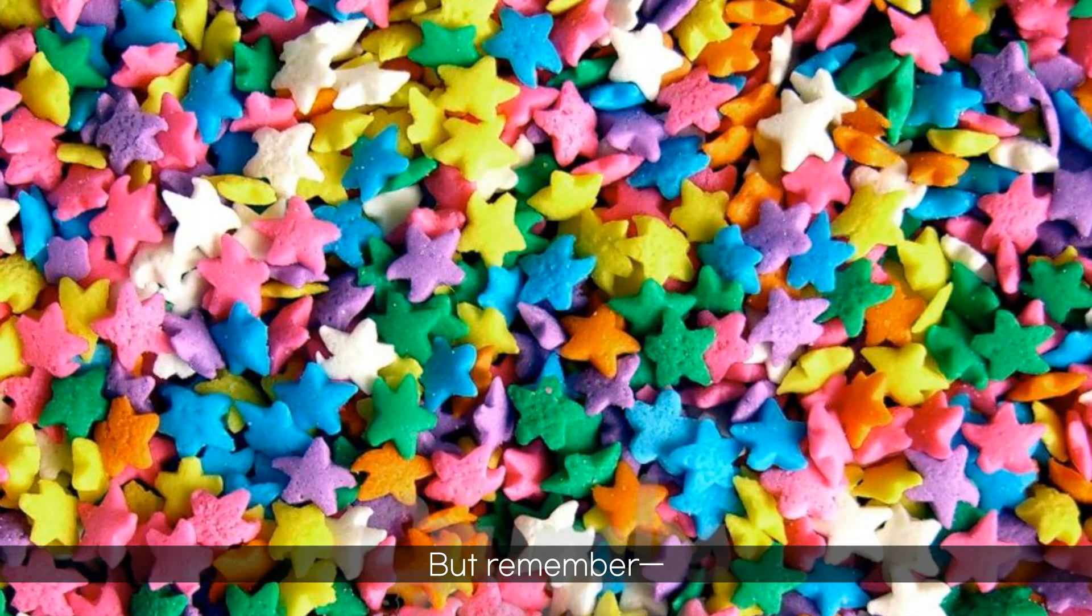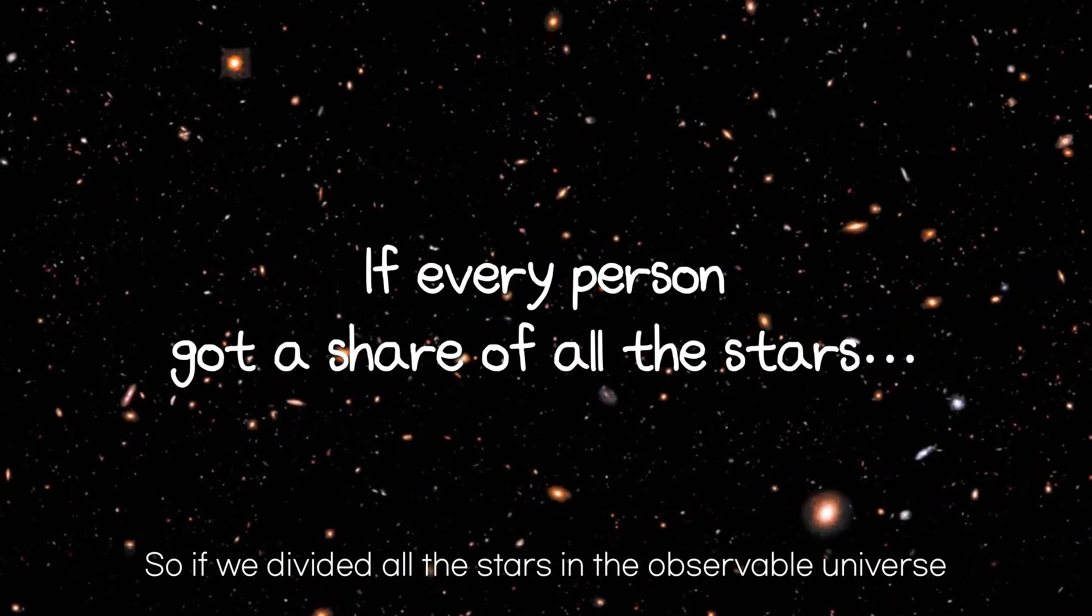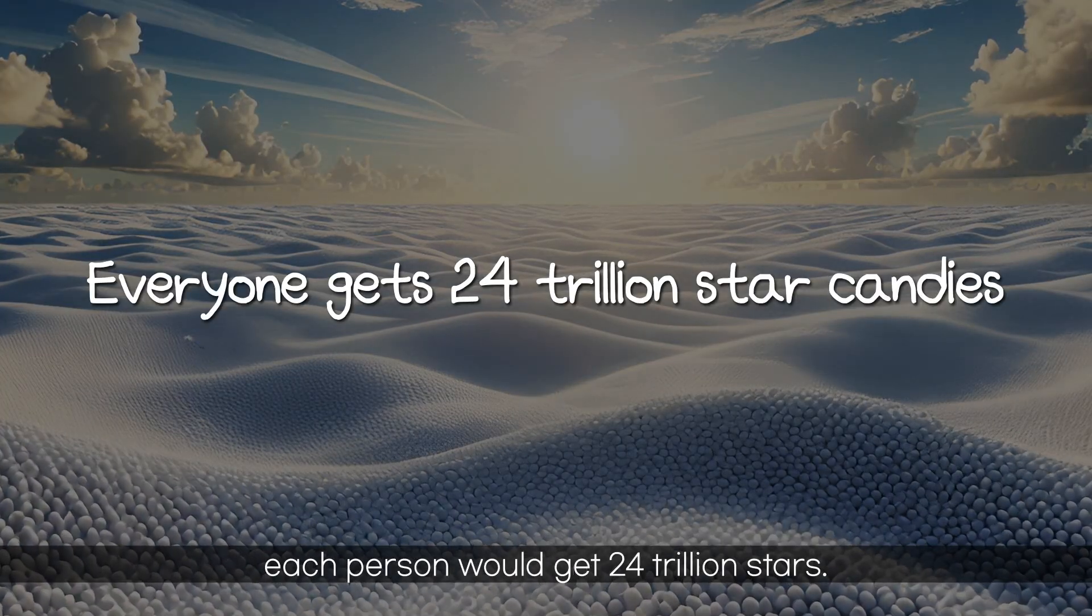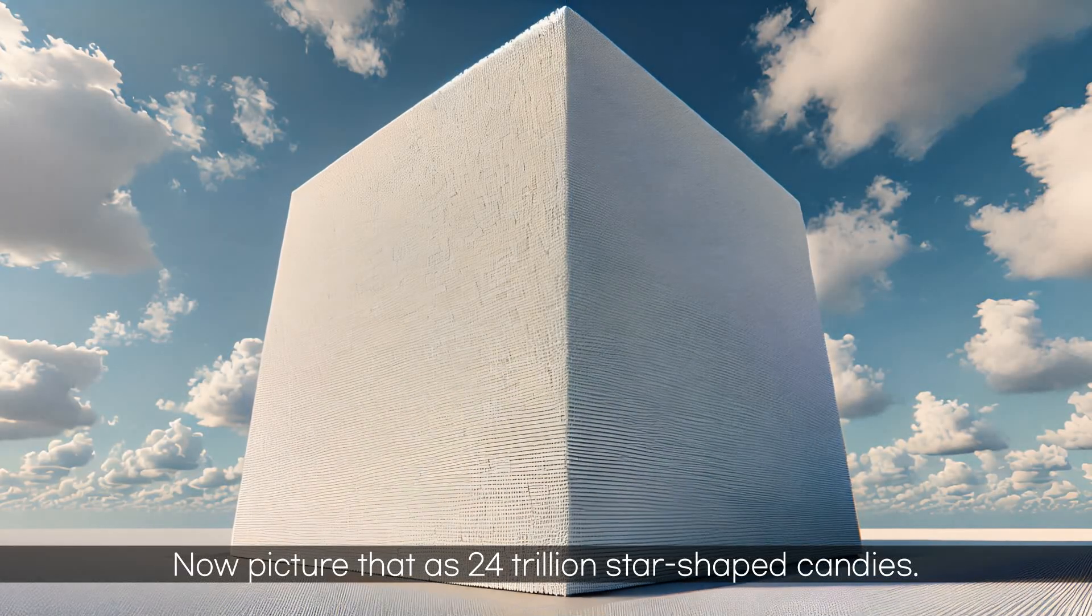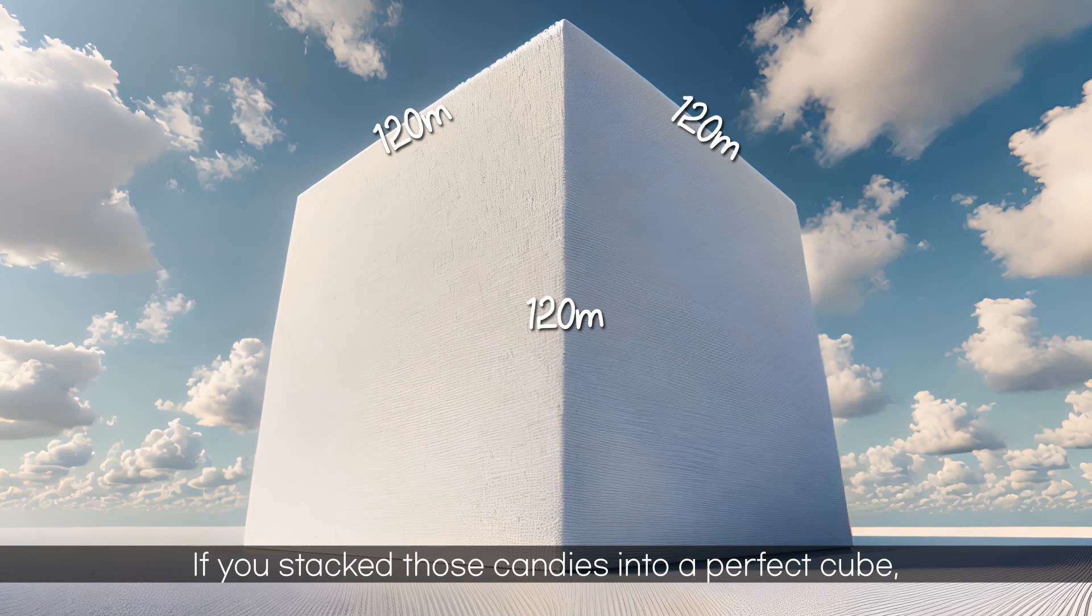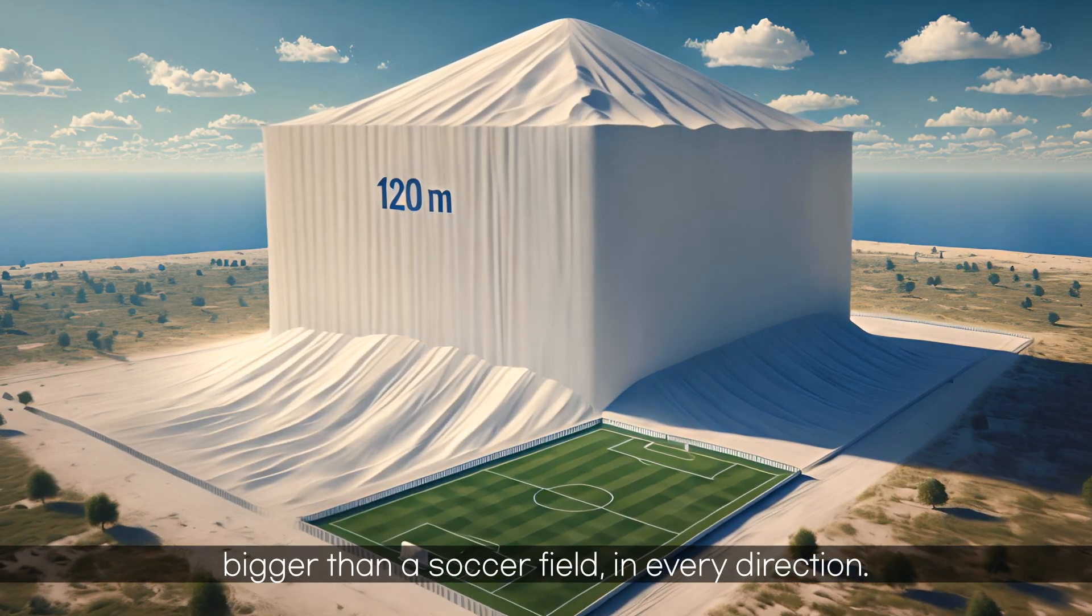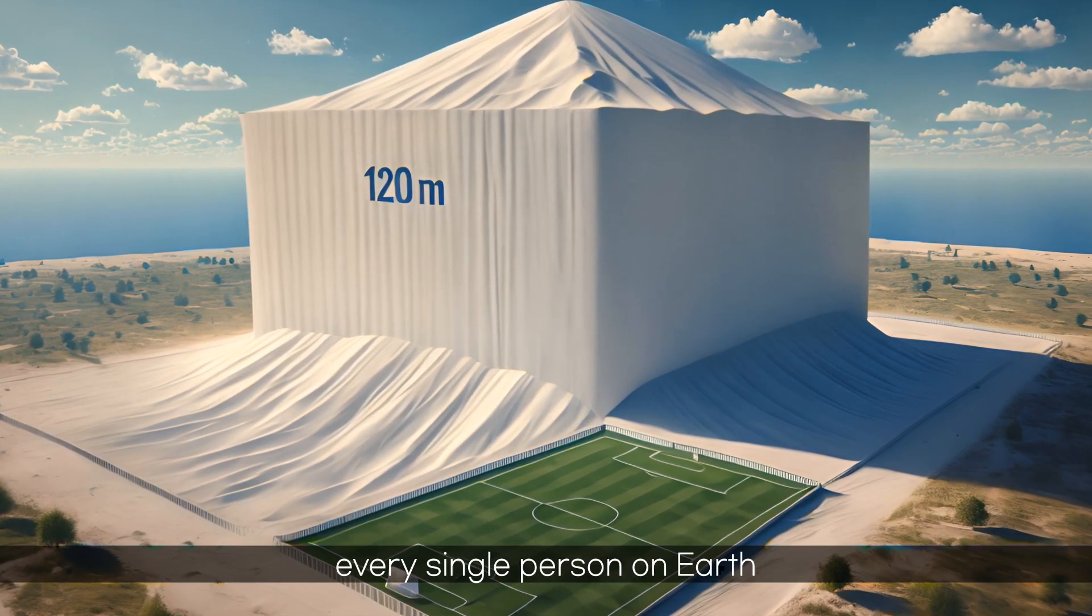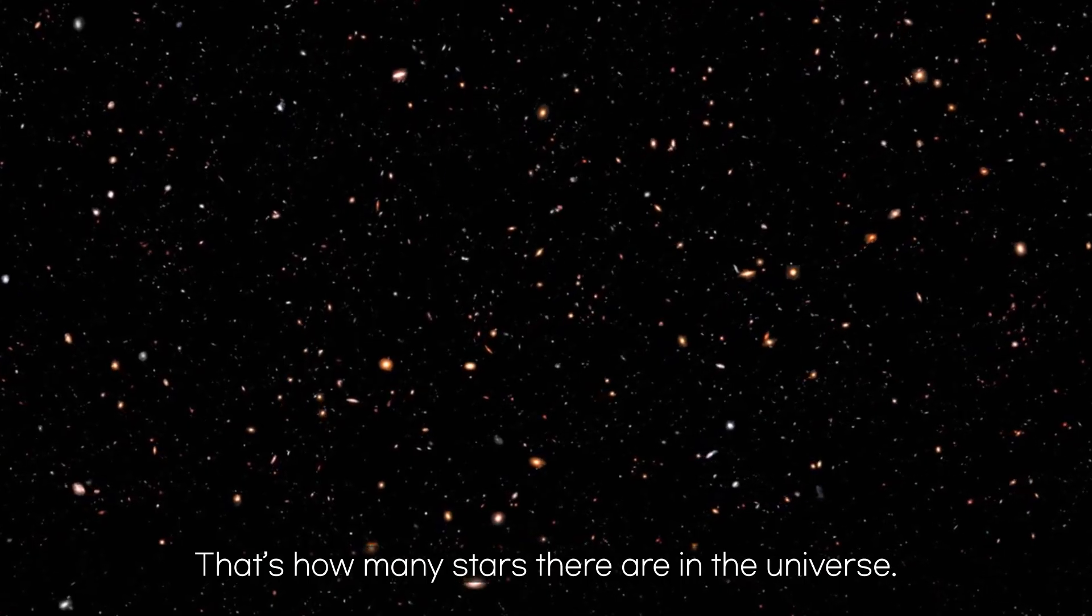But remember, we're talking about 2 trillion galaxies in the universe. So if we divided all the stars in the observable universe among Earth's population, each person would get 24 trillion stars. Now picture that as 24 trillion star-shaped candies. If you stacked those candies into a perfect cube, it would measure about 120 meters on each side, bigger than a soccer field, in every direction. And here's the mind-blowing part. Every single person on Earth could have one of these massive candy cubes. That's how many stars there are in the universe.